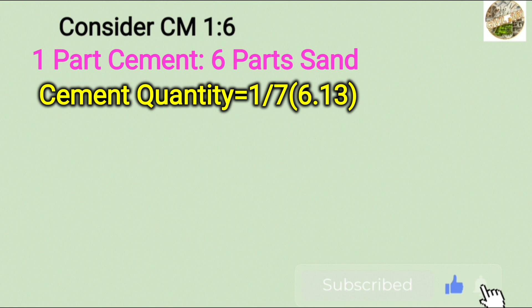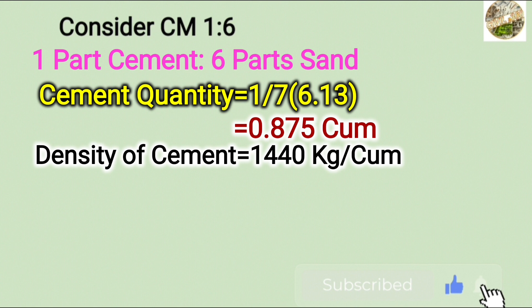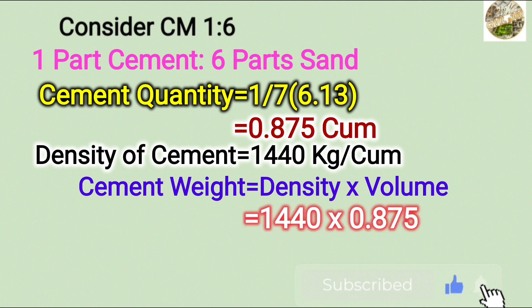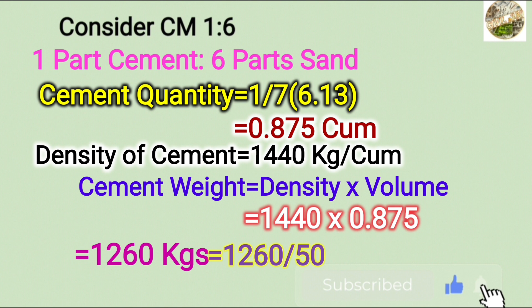The total parts are 1 plus 6, giving 7 parts of cement. 1 divided by 7 into 6.13. The density of cement is 0.875 cubic meters. The density of cement is 1440 kg per cubic meter. The cement is equal to 50 kg per bag. The total weight is 15.6 kg per cubic meter.